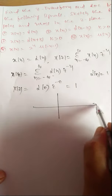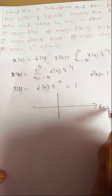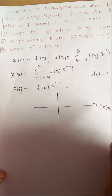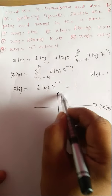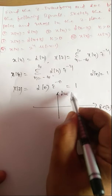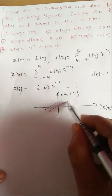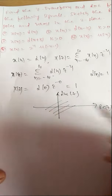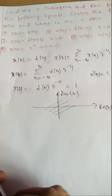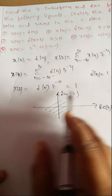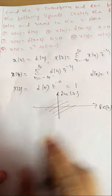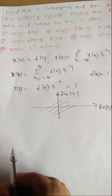The ROC is the entire Z-plane. This is the real part of Z and this is the imaginary part. ROC is the entire Z-plane — for any value of Z, the answer is 1.